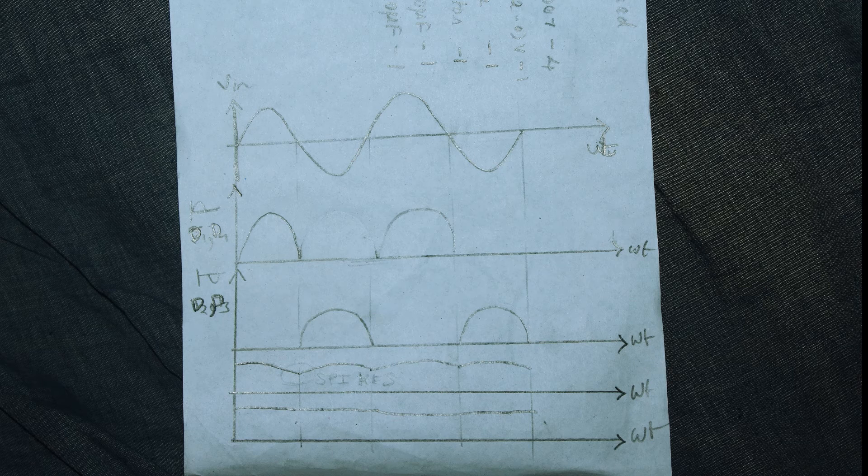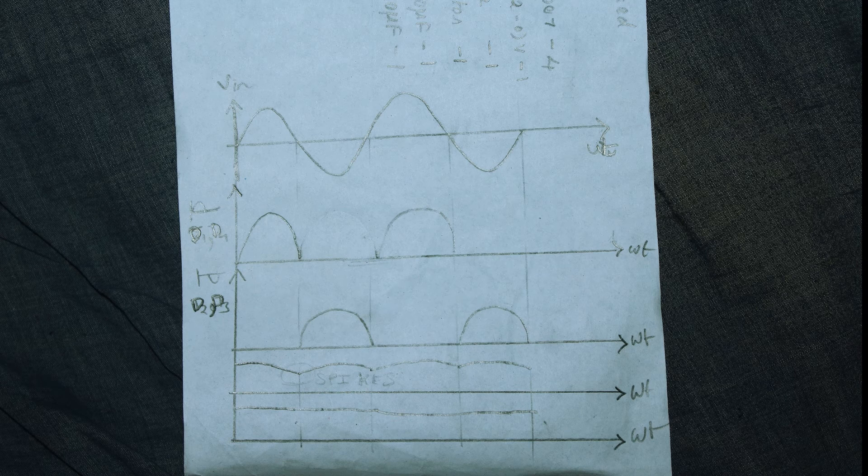But you can see some spikes in that output. So when we add a capacitor to it, we will get a steady state DC current.